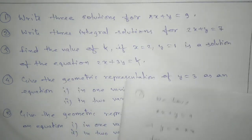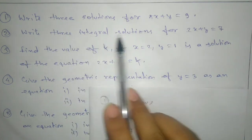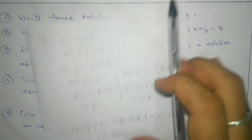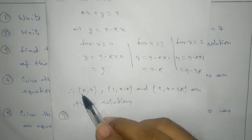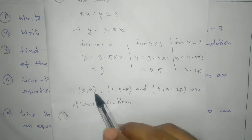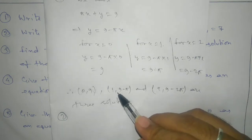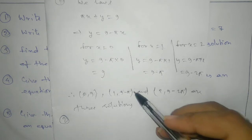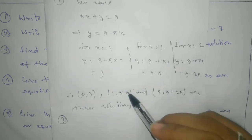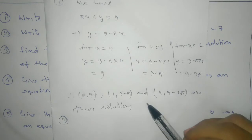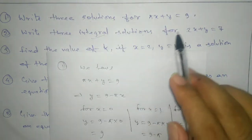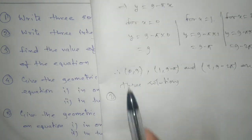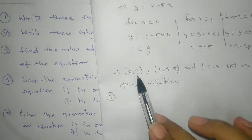Now the next question asks to write three integral solutions. The difference between a solution and an integral solution is that in an integral solution, both values must be integers. For example, (0, 9) is an integral solution since both are integers. But solutions like (1, 9 minus π) are not integral solutions because π is an irrational number and irrational numbers are not integers. So we need to find solutions where both values are integers.